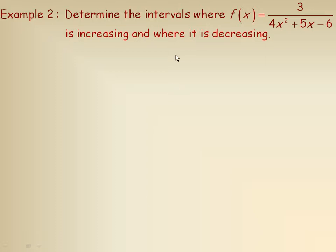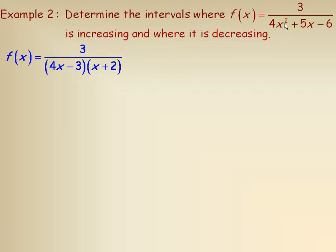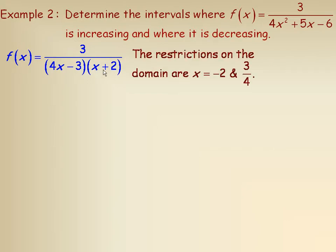In this example we're going to determine the intervals where this function is increasing and where it's decreasing. To do that we need to factor the denominator 4x² + 5x − 6, which factors into (4x − 3)(x + 2). There are two restrictions: x = −2 makes the second factor zero, and x = 3/4 makes the first factor zero.